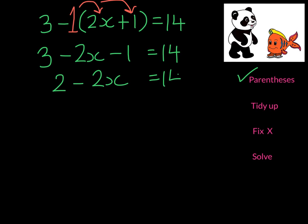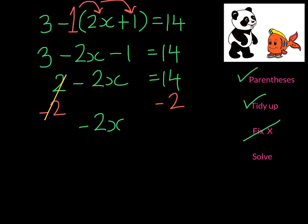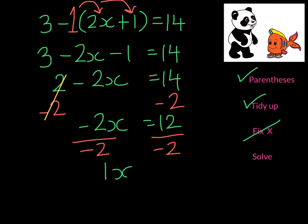The rest of the equation stays the same, so I've tidied up. I don't need to fix x because I only have one variable in this equation, so I just proceed to solve. I subtract 2 from both sides. On the left-hand side I'm left with negative 2x. On the right-hand side I'm left with 12. At this point we divide by negative 2 on both sides, and x will be negative 6.